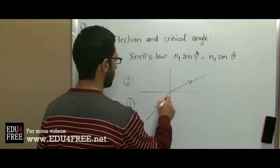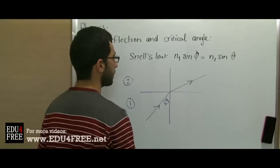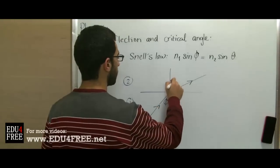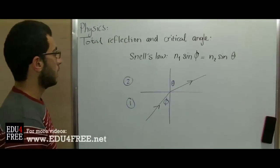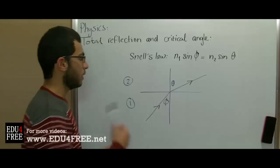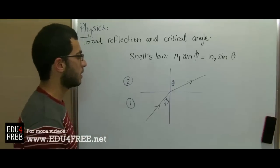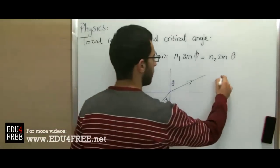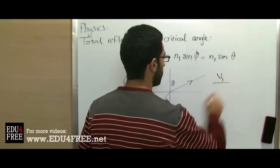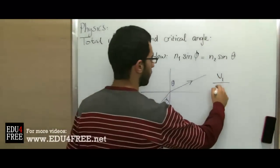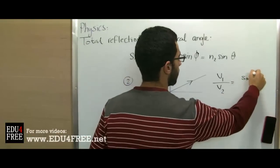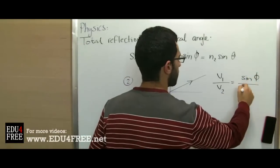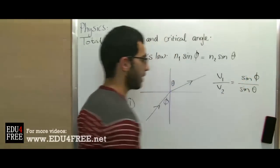We have the angle of incidence, which is φ, and the angle of refraction, which is θ. We know that the velocity of light in medium one over the velocity in medium two equals sine of the angle of incidence over sine of the angle of refraction.